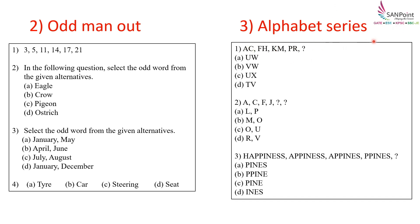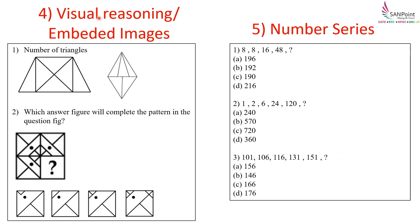Alphabet Series: certain alphabets are given and you need to find which comes next. Next is visual reasoning or embedded images — for example, you need to count the number of triangles, or identify which answer figure will complete the pattern in a given figure. Number series questions are also of this type.